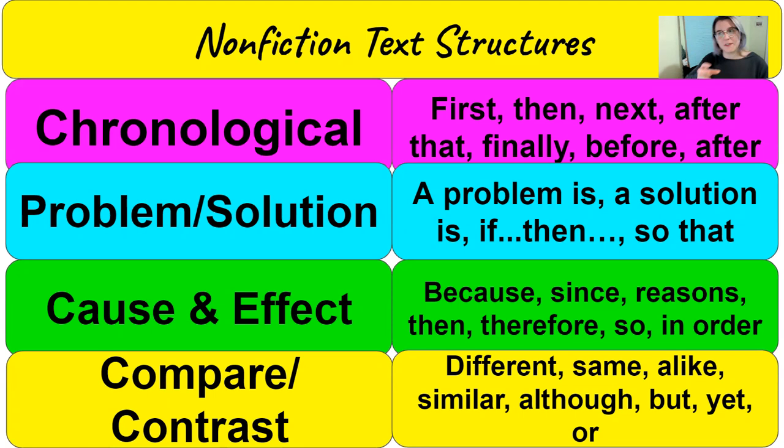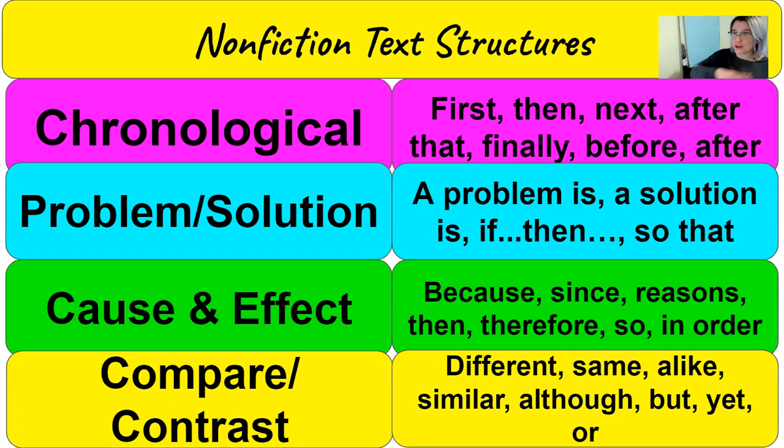There's chronological, which means things that take place in order. Words that tell you you're reading a chronological text are: first, then, next, after, finally, before, after — words that show you that things are happening in order.